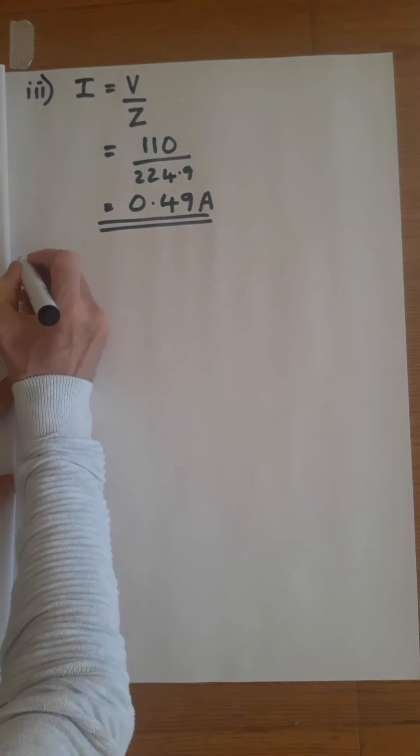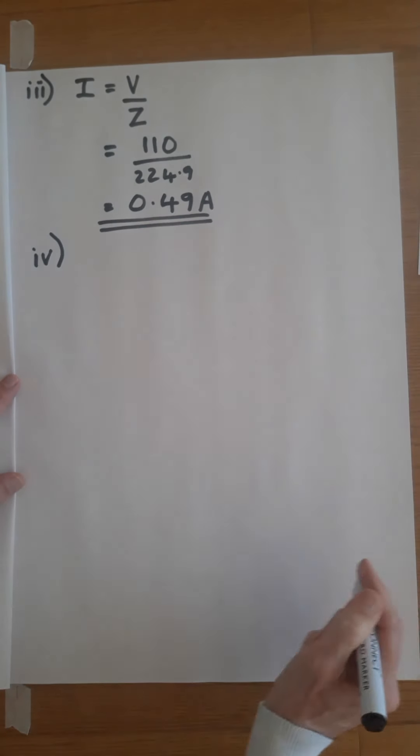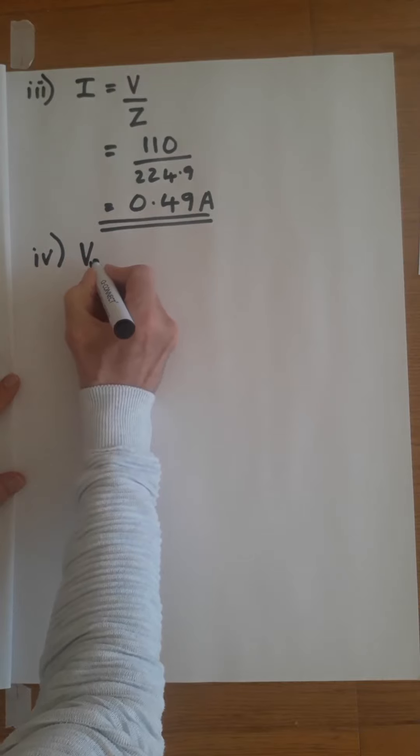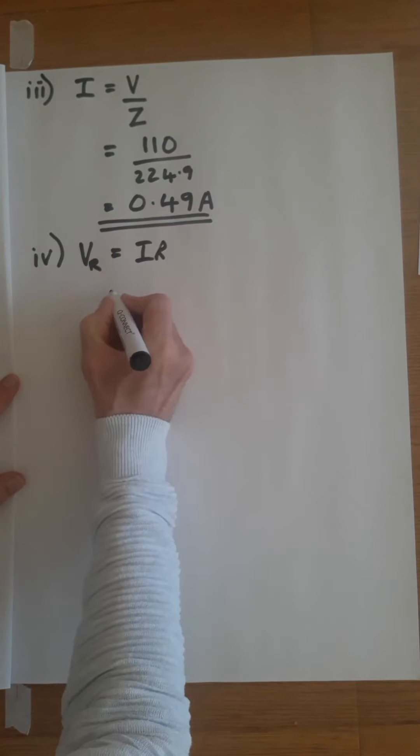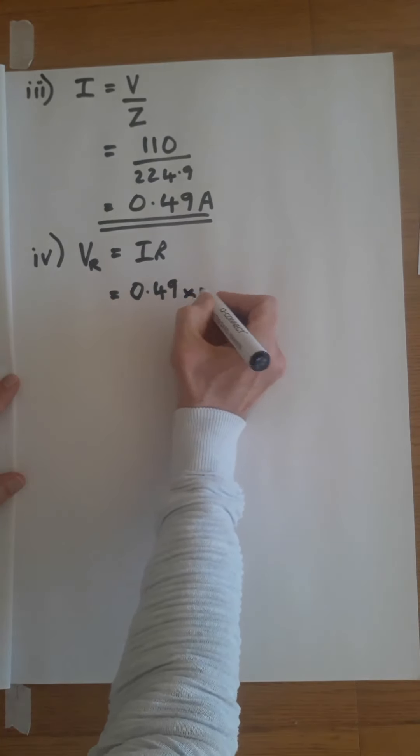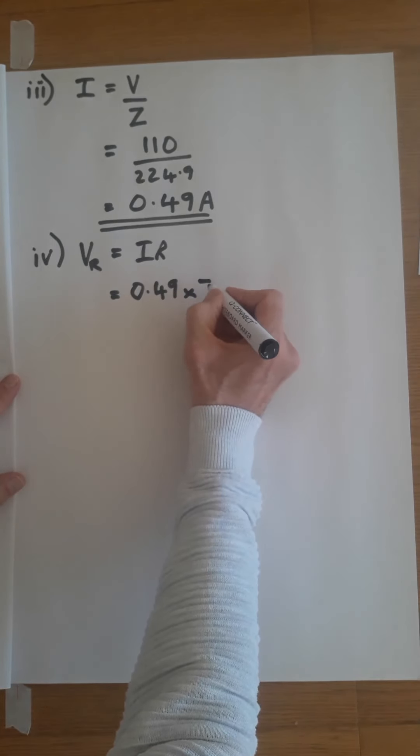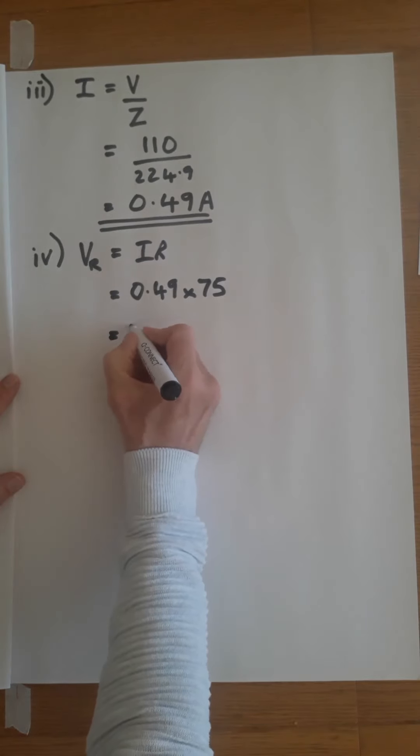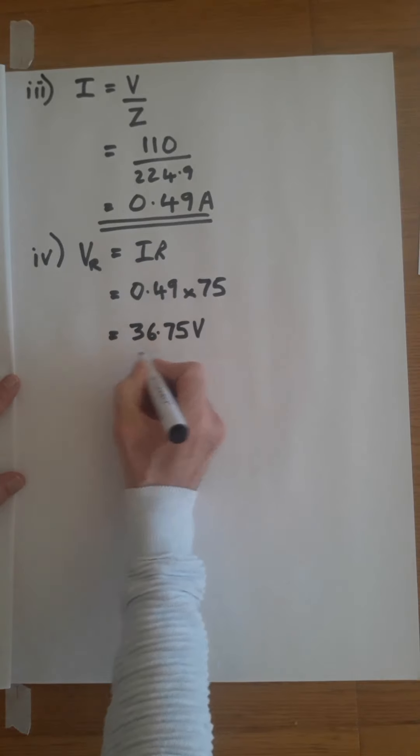Part 4, the voltage across the resistor. Ohm's law: voltage across the resistor is I times R. The current is 0.49, R is 75. If you work that out, that's 36.75 volts.